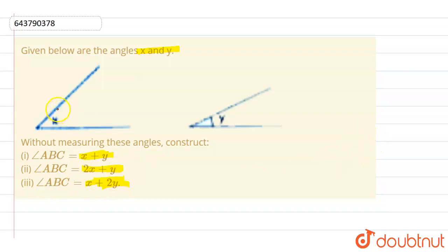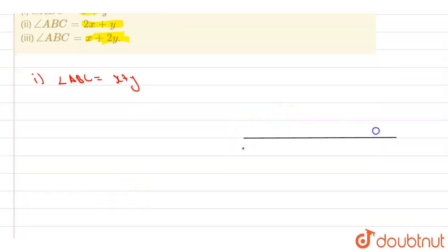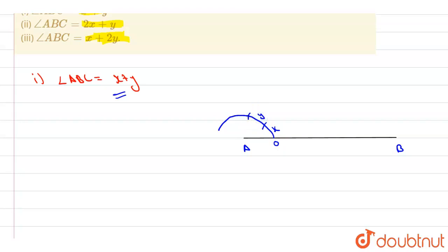It is very simple — just use a compass to measure angle x and angle y. From the starting point, cut an arc for x and then an arc for y. To draw the first angle ABC equal to x plus y: draw a line named AB, from B make an arc of your choice, from the start of the arc cut an arc measuring x, then from that point of intersection cut an arc measuring y, and draw line AC. This gives angle x plus y without measuring.